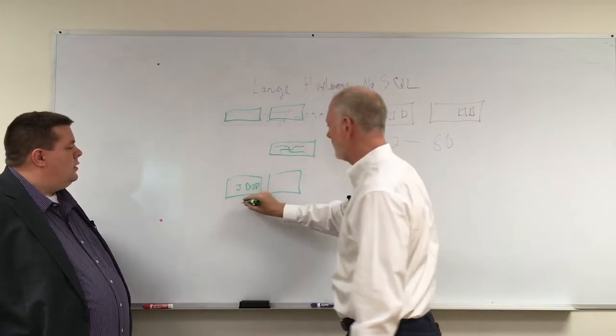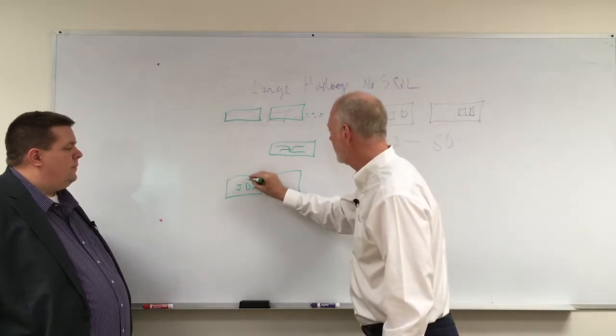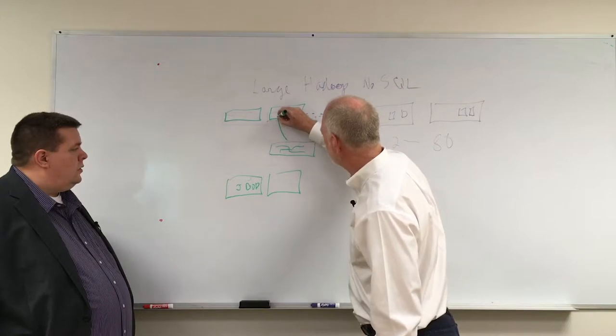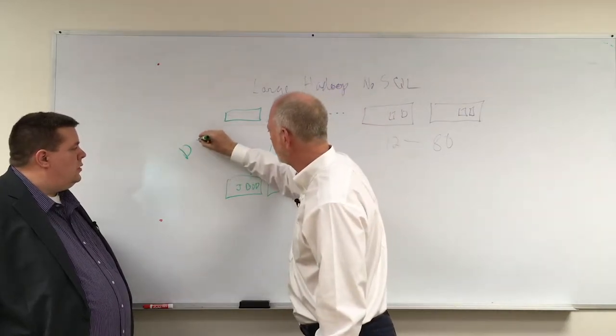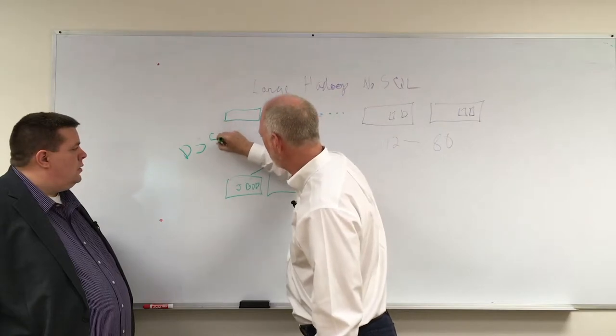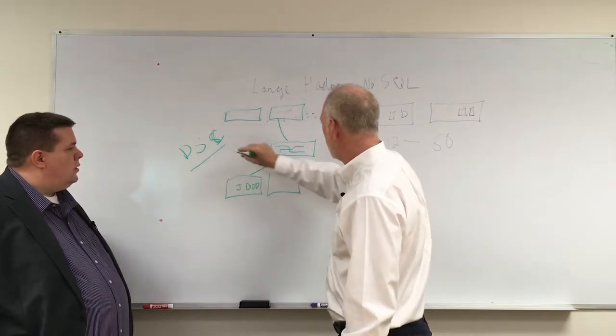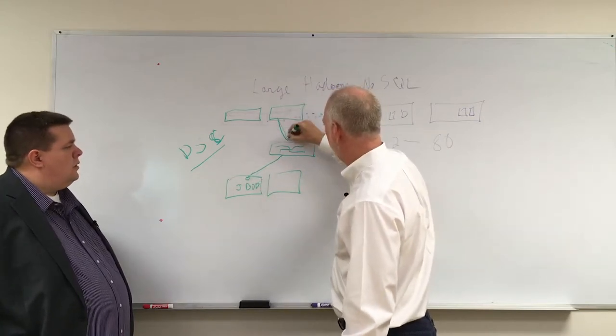And each JBOD will have 80 to 100 disk drives in it. And a particular disk in a JBOD can be assigned to a particular server through our DriveScale software control system, DSC software. Software will make the assignment of this disk drive to this server happening through the switch.